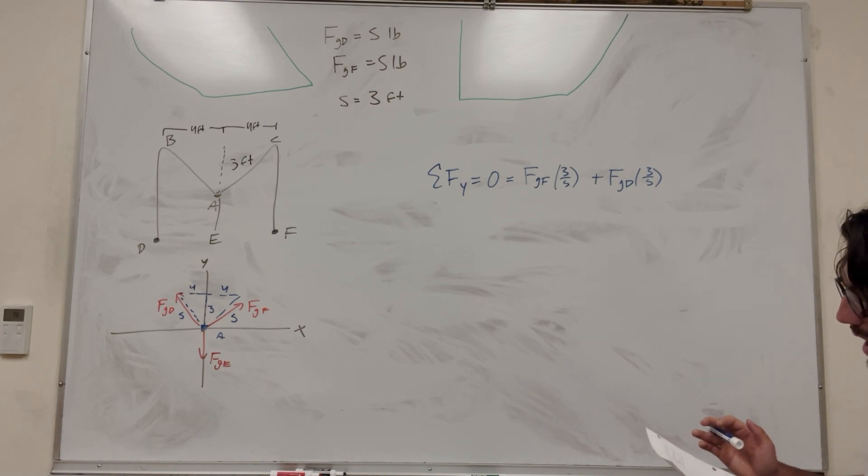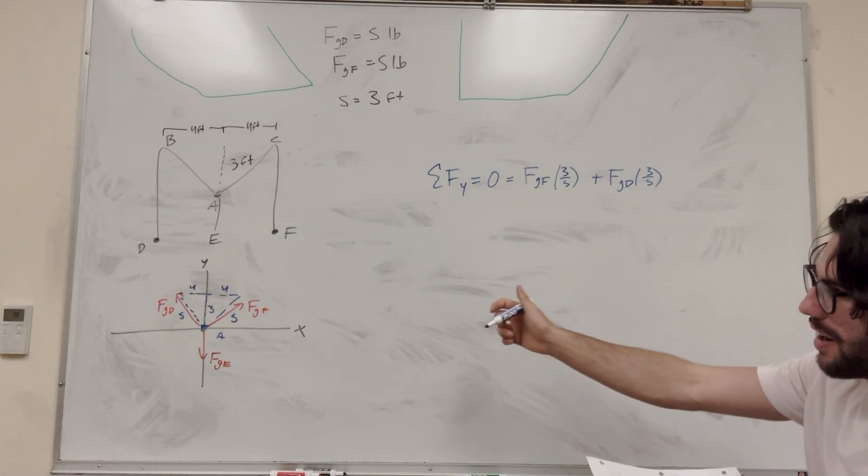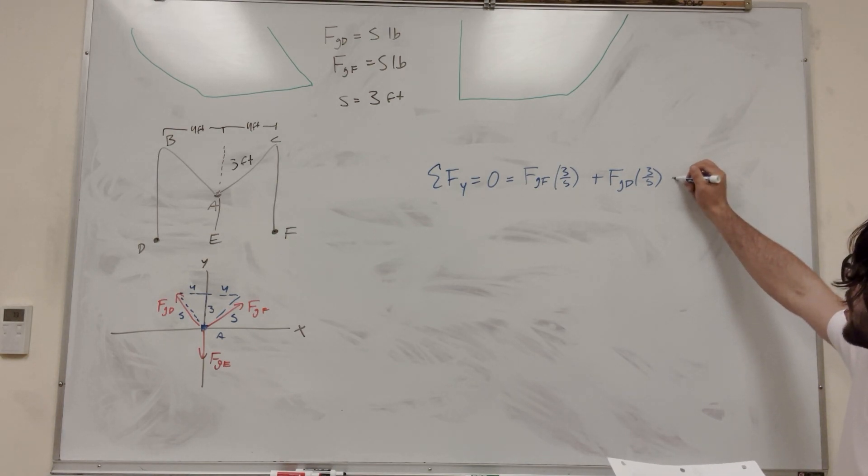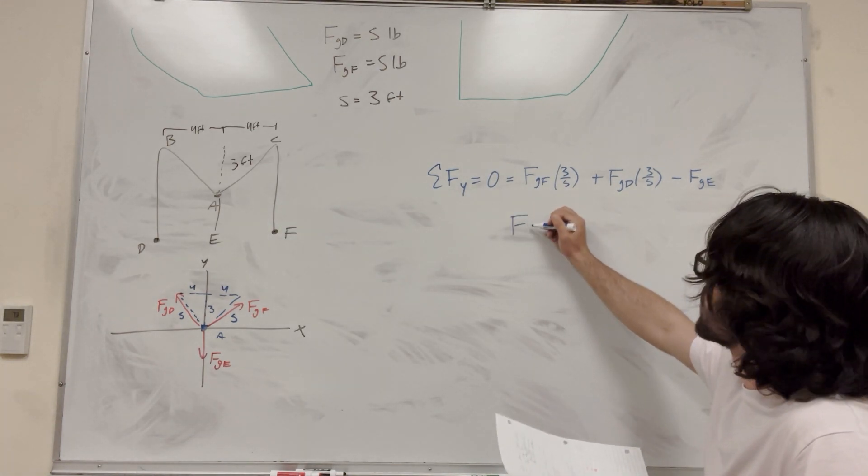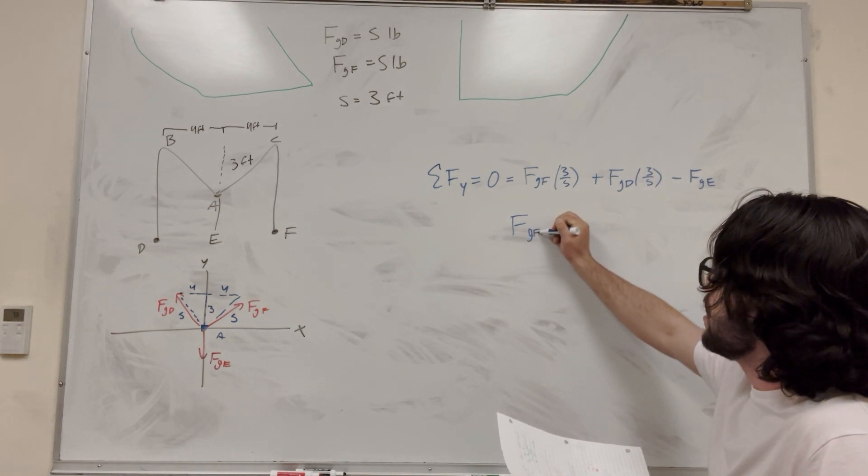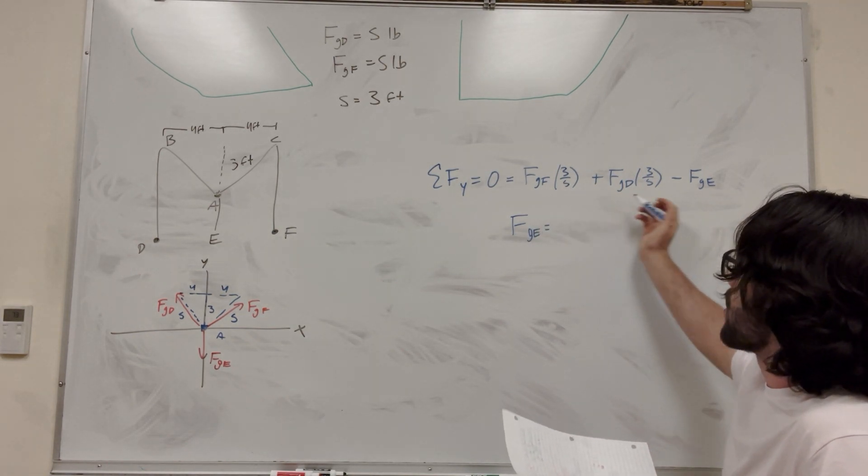Cool, so what's the next one? Well, one of them is pulling down, force gravity E. That's what we're looking for. So minus force gravity E. And then this one just pulls straight down, so we don't have to do any of the ratios. So then all we have to do is move this to the other side. We're going to get force gravity E is equal to, and then let's plug in our numbers. So force gravity F,